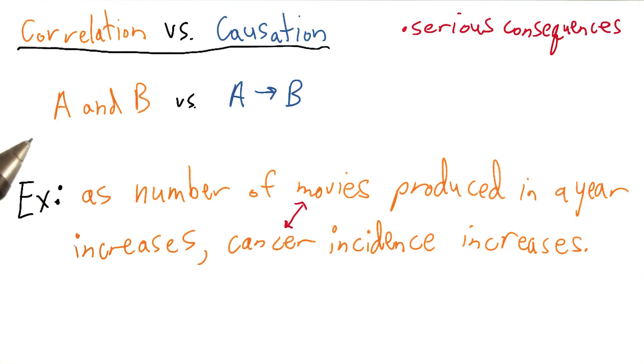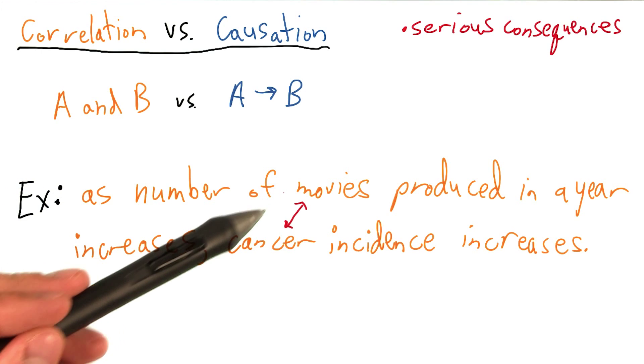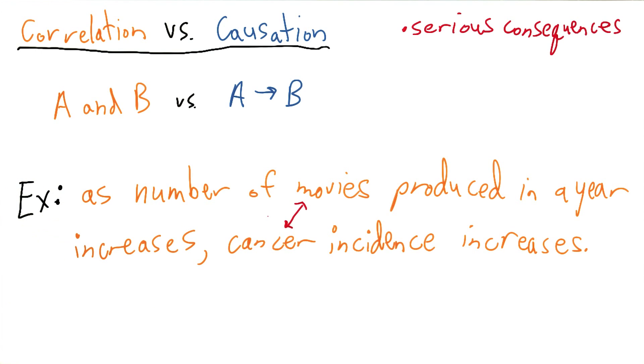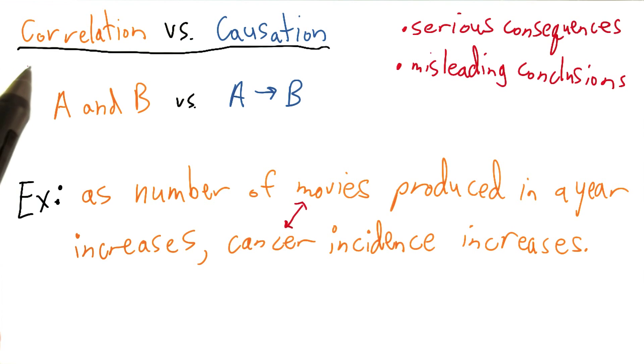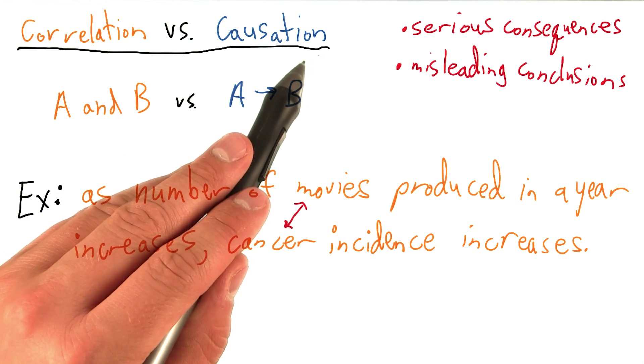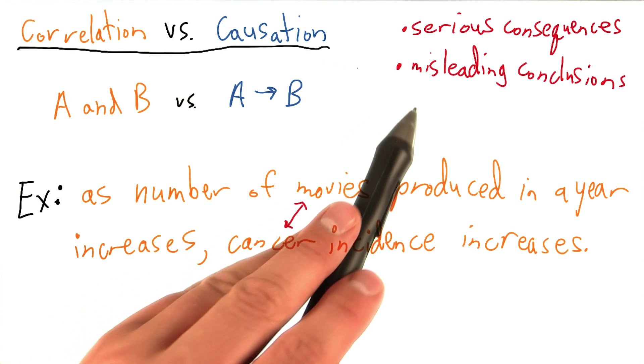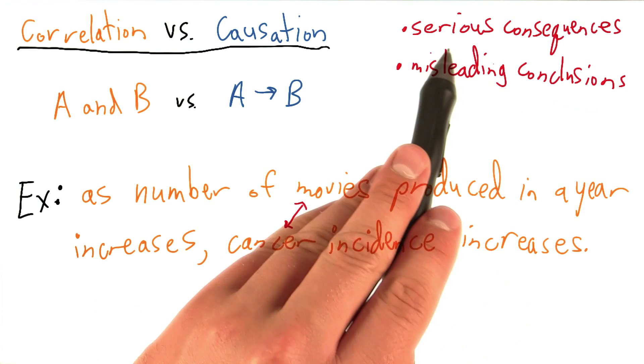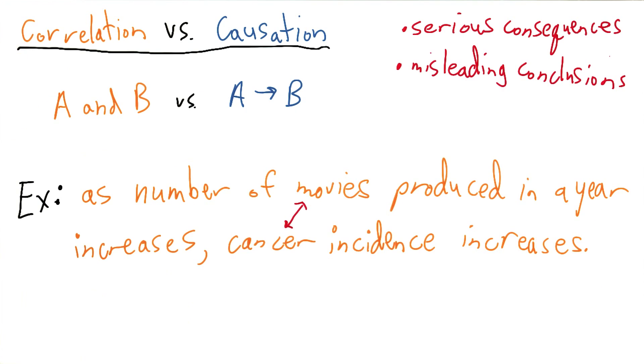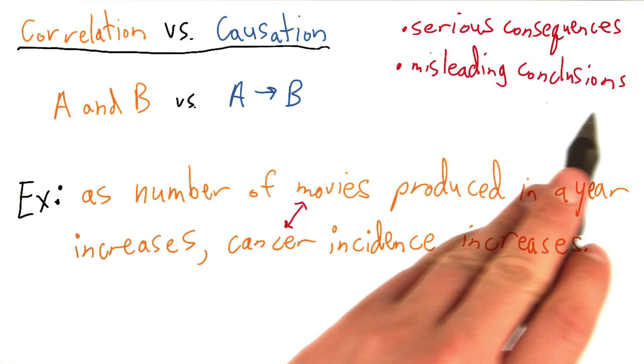Let's say that a doctor sees a paper published based on this connection and relation that some analyst found and then decides to recommend to all of his patients to stop watching all movies and TV because it increases cancer incidence. By misinterpreting a correlation to in fact be causation could lead to many misleading conclusions and thus serious consequences that others might take based on those conclusions.